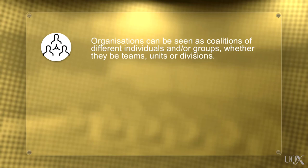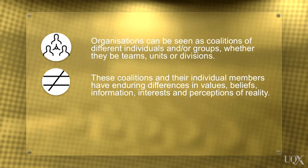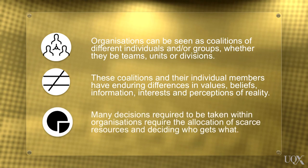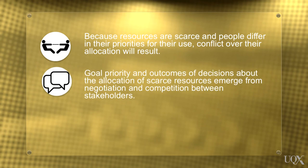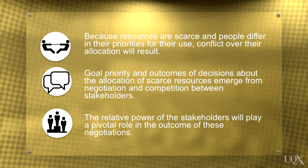In this world view, power plays a critical role in leadership. If we consider the following logic, organisations can be seen as coalitions of different individuals and or groups, whether they be teams, units or divisions. These coalitions and their individual members have enduring differences in values, beliefs, information, interests and perceptions of reality. Many decisions taken within organisations require the allocation of scarce resources and deciding who gets what. Because resources are scarce and people differ in their priorities for their use, conflict over their allocation will result. Goal priority and outcomes of decisions about the allocation of scarce resources emerge from negotiation and competition between stakeholders. The relative power of the stakeholders will play a pivotal role in the outcome of these negotiations. In this sense, power can be viewed as the capacity to influence decisions to go the way you desire.